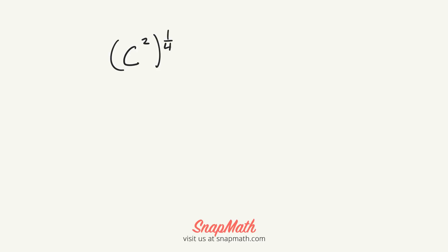Hi Melissa, thanks for sending a question to Snap Math. The rule is: whenever you have an exponent to a power of an exponent, you multiply. So the rule would be something like this — x squared is just an example.